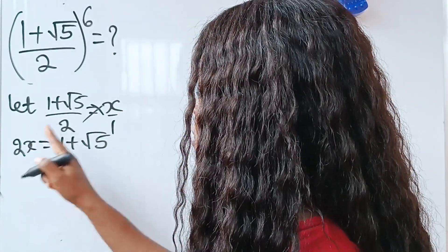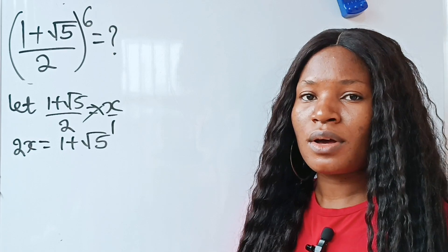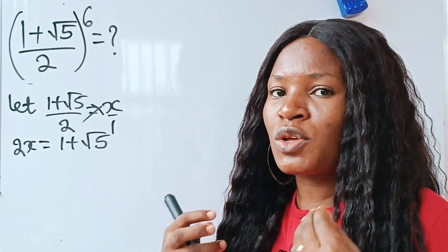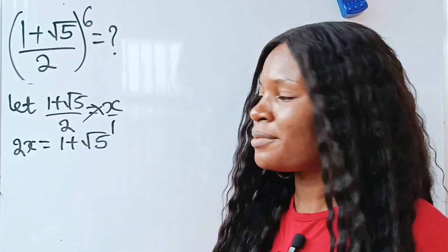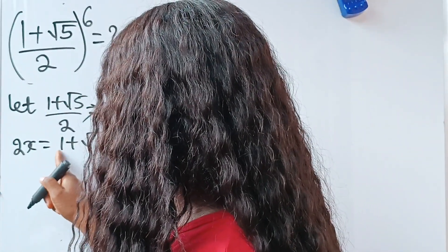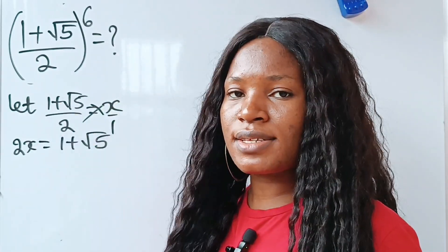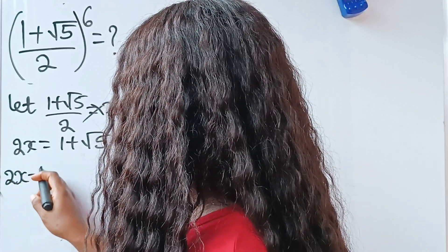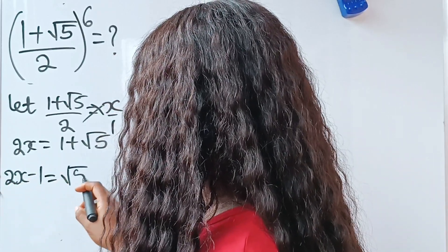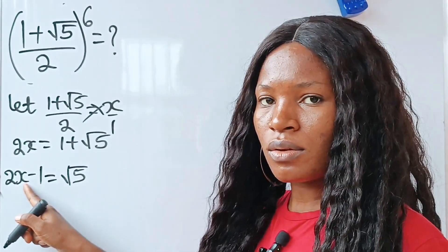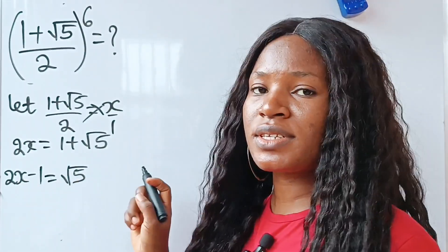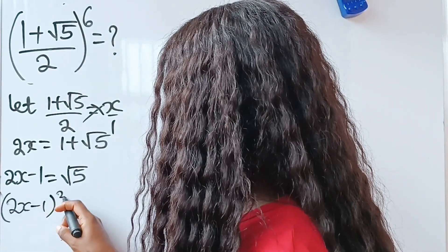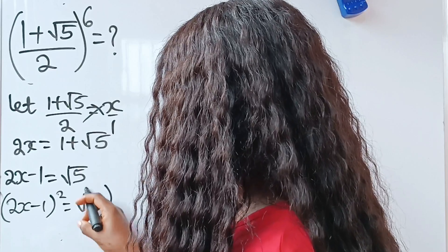Now let's transfer this to the other side. I am trying to get x squared. When I get x squared, I can get x to the power of 3 from there, and when I get x to the power of 3, I will get my answer. So we bring the +1 to the other side and it becomes −1. So we have 2x − 1 = √5. Now, to get x squared, let's square both sides of this equation. So we are going to have (2x − 1)² = (√5)².